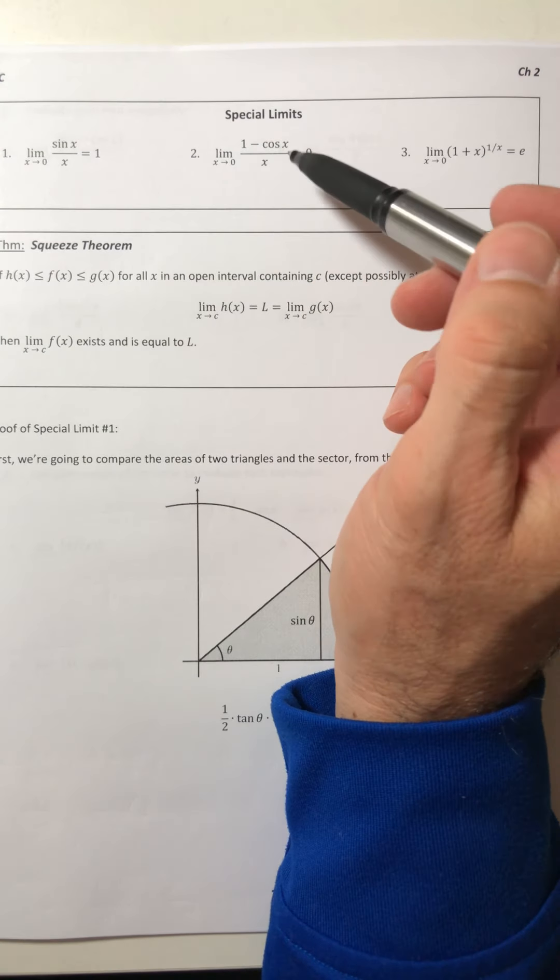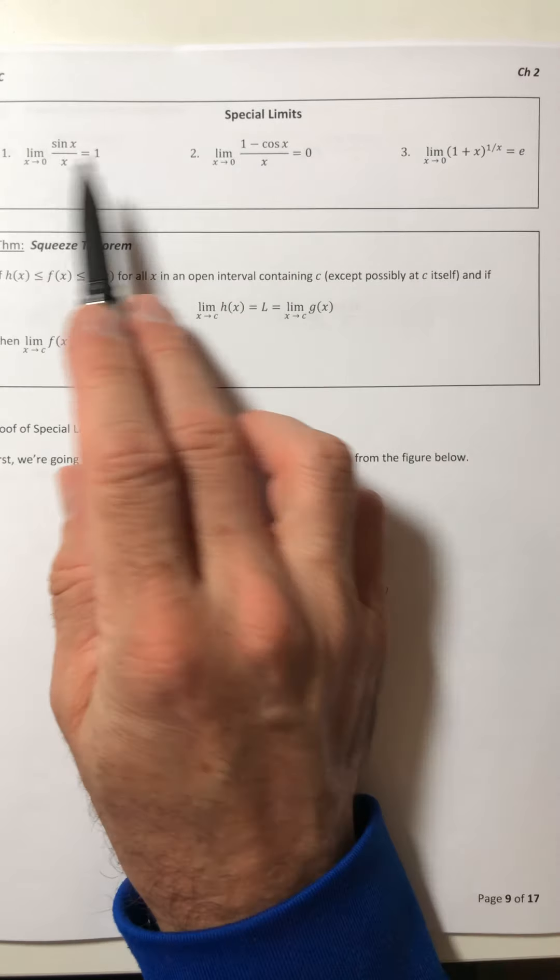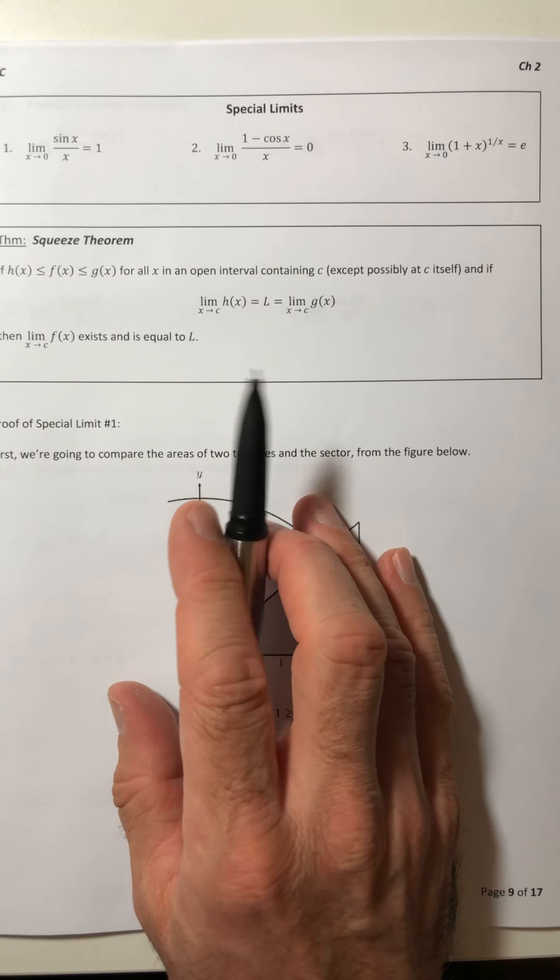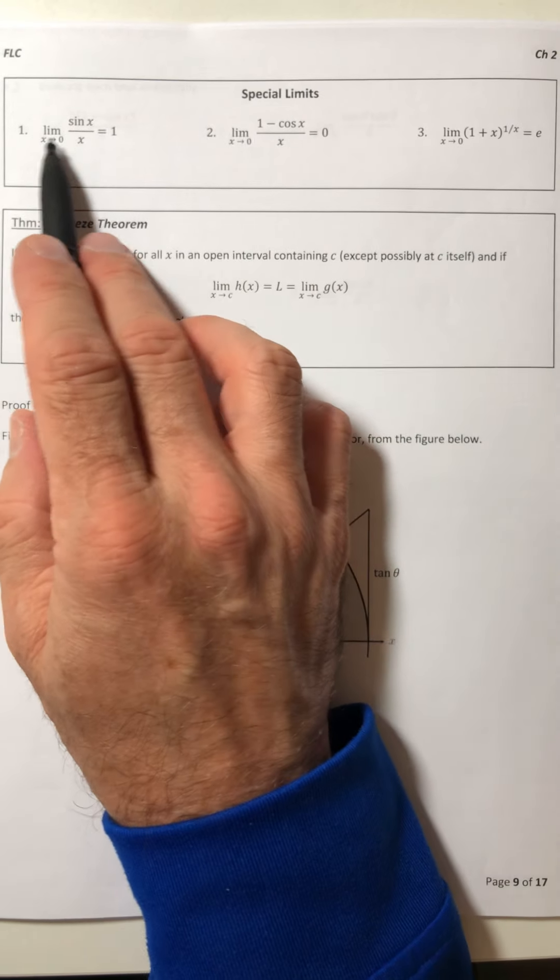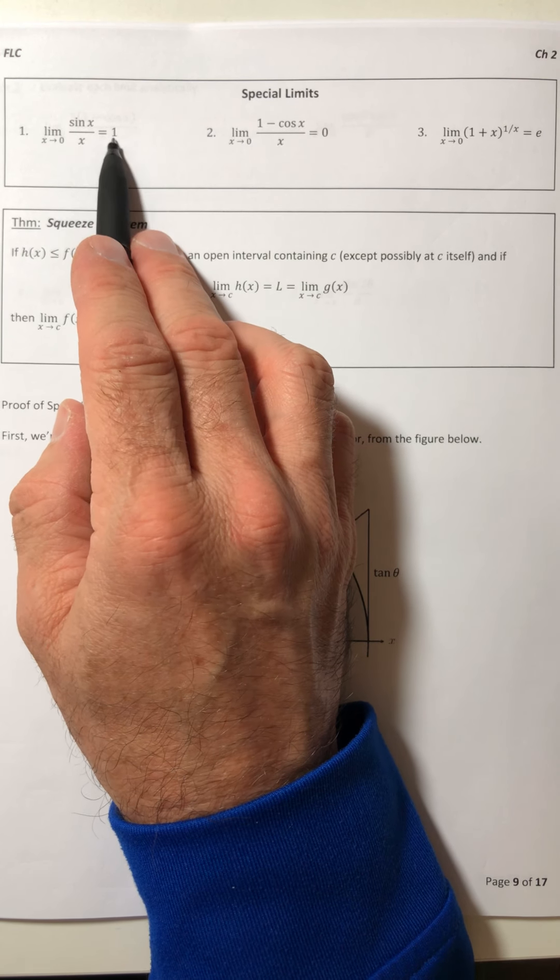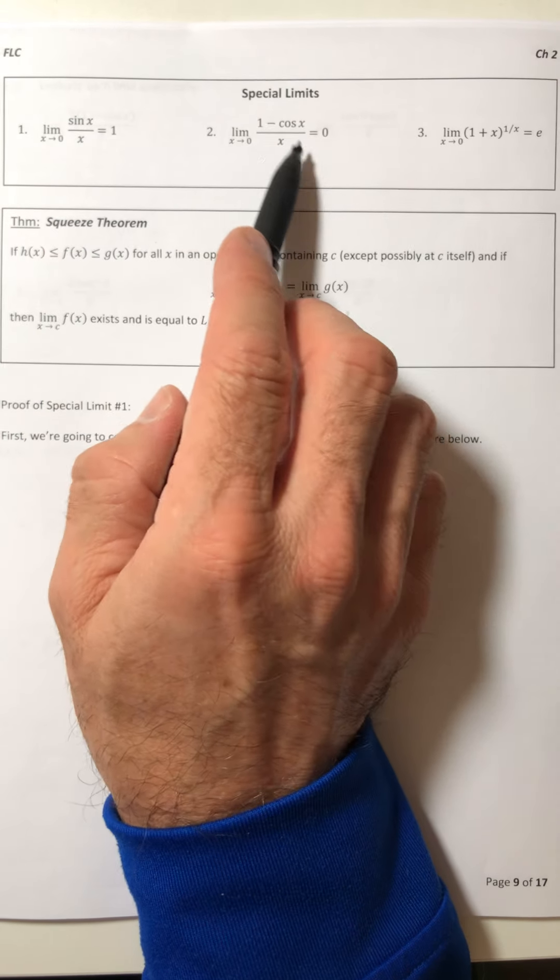Alright, let's start out with looking at these special limits. So we have three limits that we're just going to kind of take for granted and use whenever they come up. So the first one, the limit as x approaches zero of sine x over x, that is going to equal one.